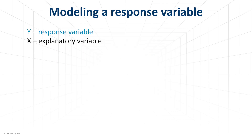Now let's look at typical models used for categorical data. They depend on the type of categories, and binary categories are the easiest ones, so we will start with this group. Let y be a response variable and x an explanatory variable. x can be a covariate such as age or sex, time, drug concentration, or any other predictor.